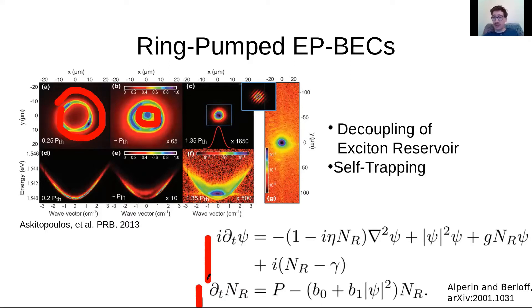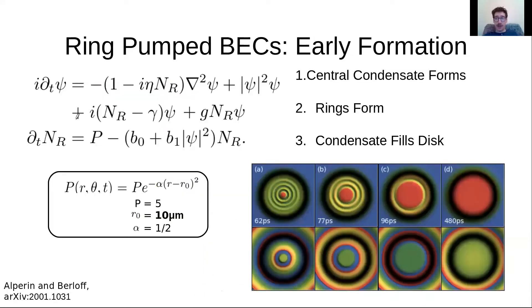We're actually just going to start by trying to understand how this early formation—how the early formation of the central condensate in a ring pump system takes place, what goes on. In numerical simulations of our model, we're solving both equations here. We see kind of what you would expect: some condensation early on in the center with Bessel-type rings, and over time this condensate fills the space and is trapped by the effective trapping potential of the pump profile.